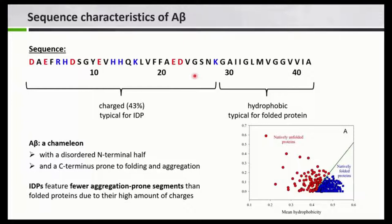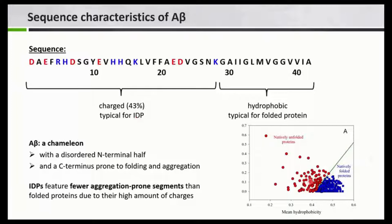Let's have a look at the sequence of A-beta. It's a short peptide with either 40 or 42 residues; the peptide with 42 residues is more toxic. Using one-letter code, the charged residues are colored: positively charged residues are shown in blue and negatively charged ones in red. One can see that A-beta is really divided — the N-terminal half is very much charged, with 43% charged residues, which is sufficient to be considered an IDP. The C-terminal third, along with some residues in the middle, is very hydrophobic.